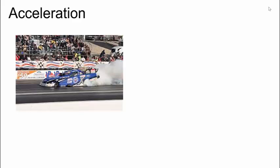Finally, acceleration. Acceleration is the rate at which an object gains speed or velocity. It can be calculated using the equation: acceleration equals the change in velocity divided by the change in time. This picture shows a drag racer which has a very high acceleration — it goes from zero to a very high speed in a very short amount of time. A lorry would have a much lower acceleration because it takes longer for it to reach the same speed.